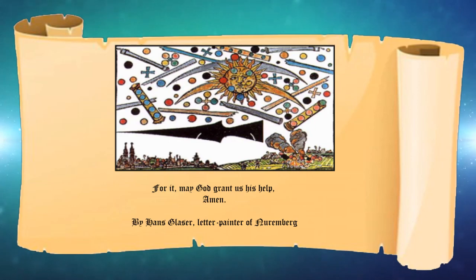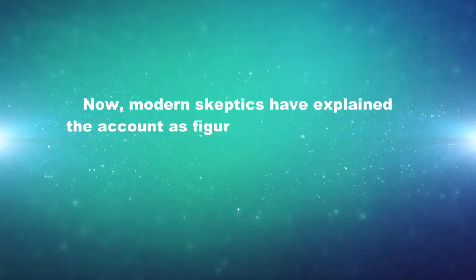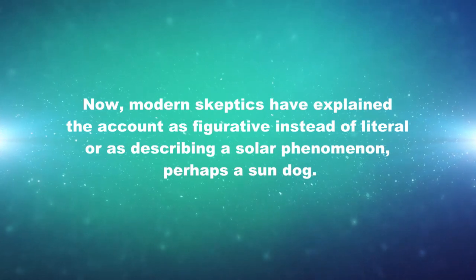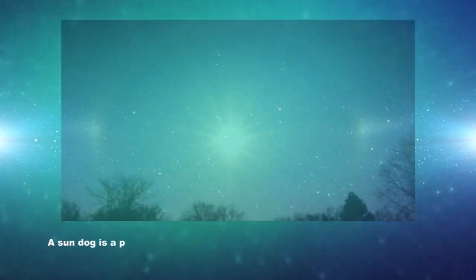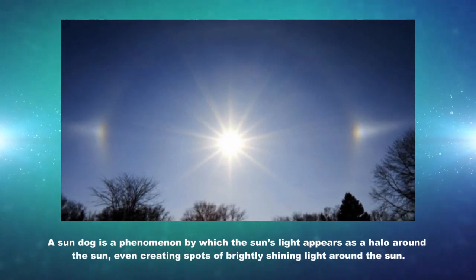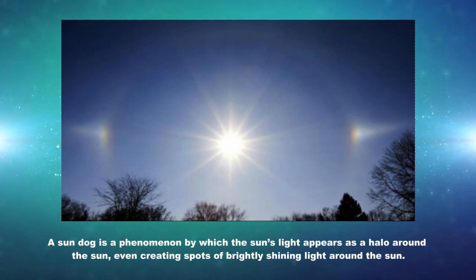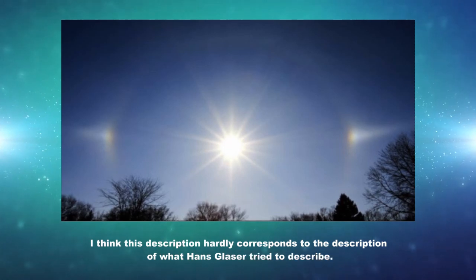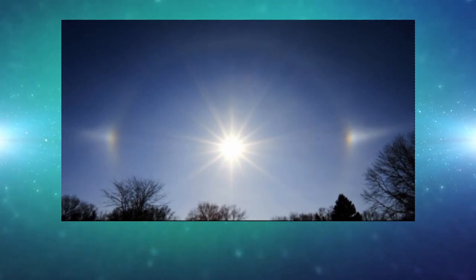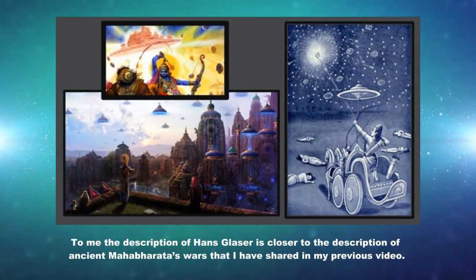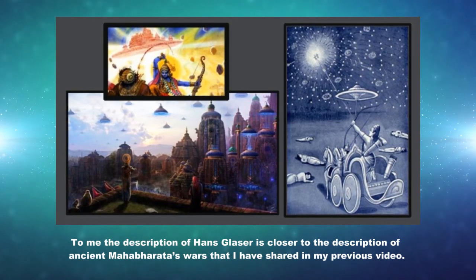By Hans Glaser, letter painter of Nuremberg. Modern skeptics have explained the account as figurative instead of literal, or as describing a solar phenomenon, perhaps a sun dog. A sun dog is a phenomenon by which the sun's light appears as a halo around the sun, even creating spots of brightly shining light around the sun. I think this description hardly corresponds to what Hans Glaser tried to describe. To me, the description of Hans Glaser is closer to the description of the ancient Mahabharata's wars that I have shared in my previous video.